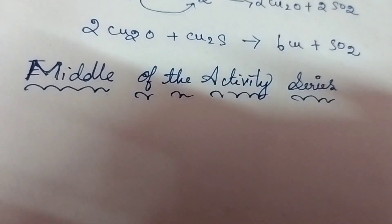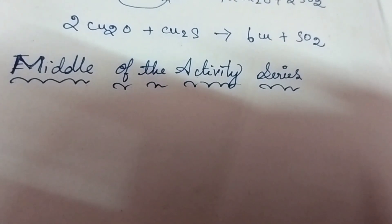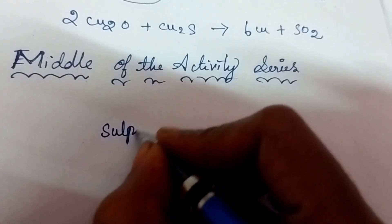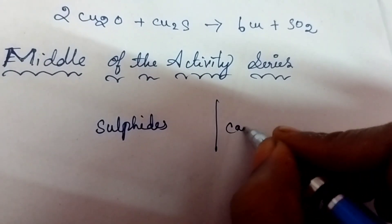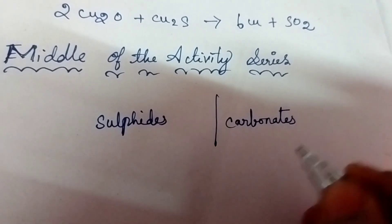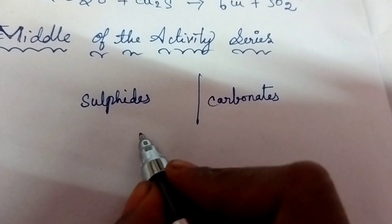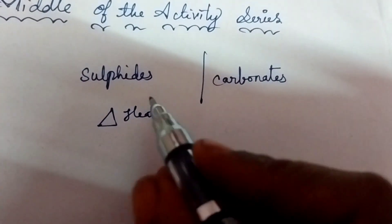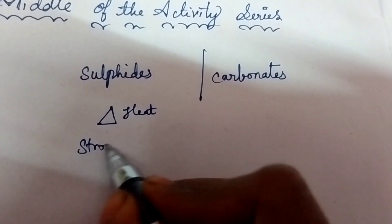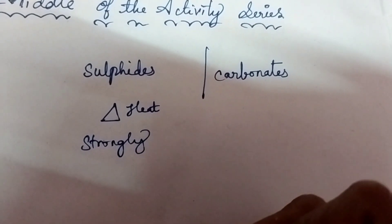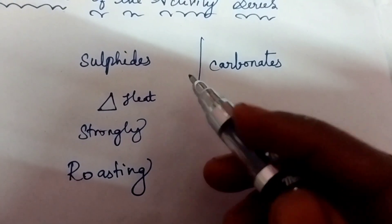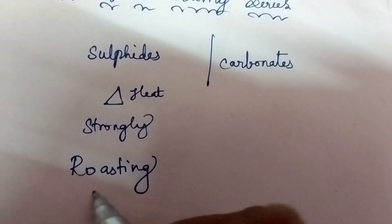Now for metals in the middle of the activity series - how are we going to extract them? These metals are present in the form of sulfides and carbonates. We heat these sulfides strongly. The heating process done on sulfides is known as roasting. I am extracting the metal from the sulfides by heating strongly, and that process is known as roasting.